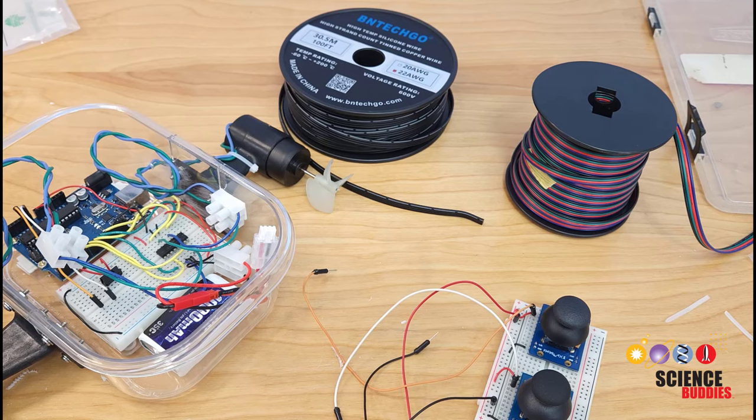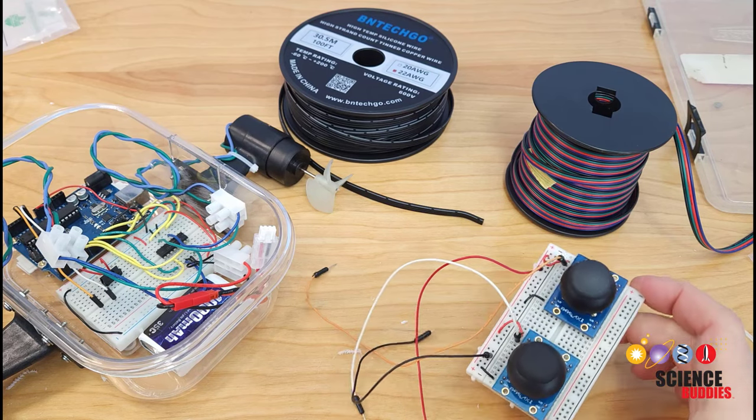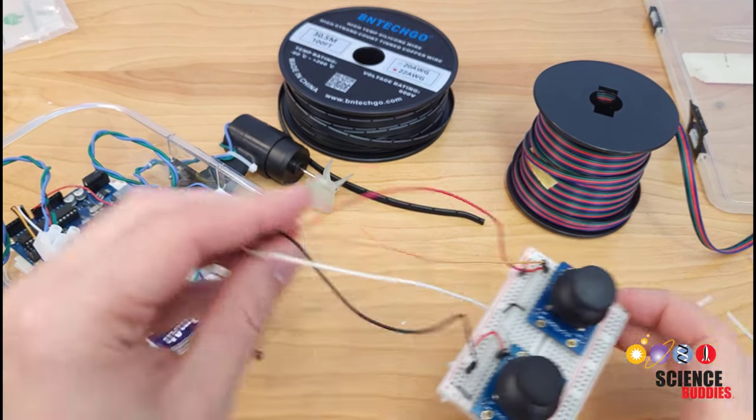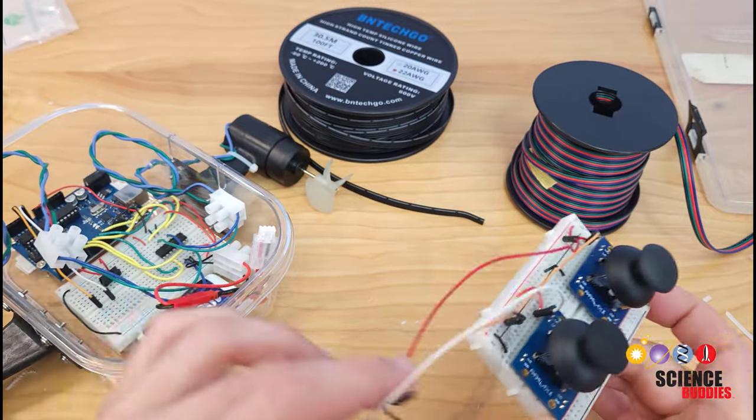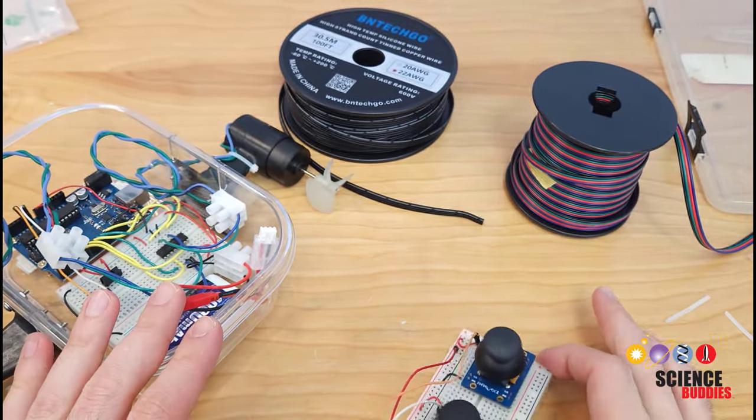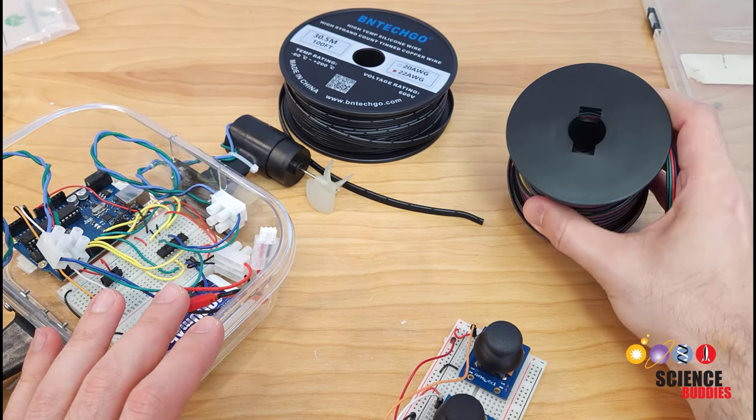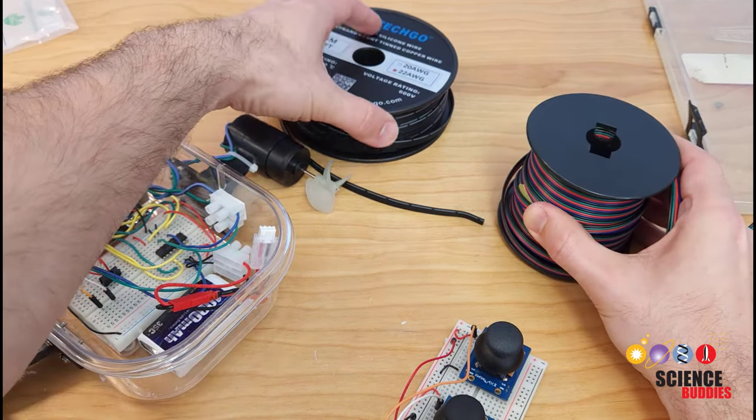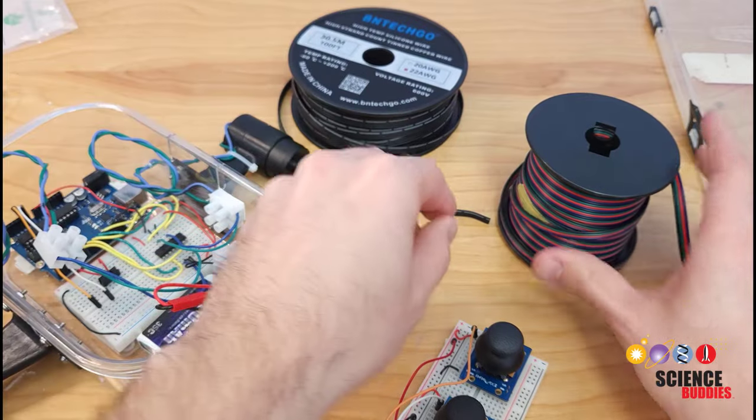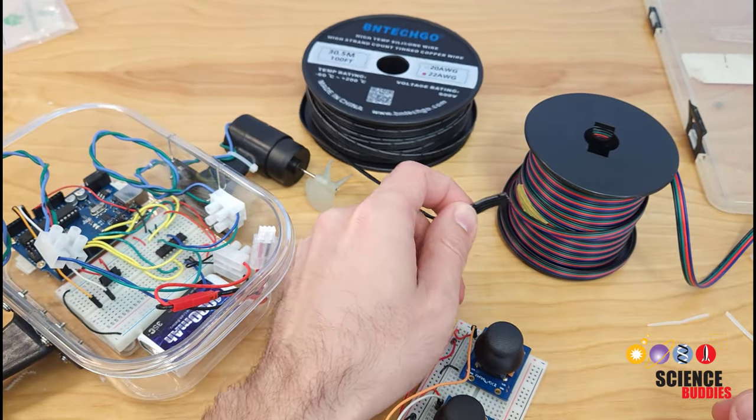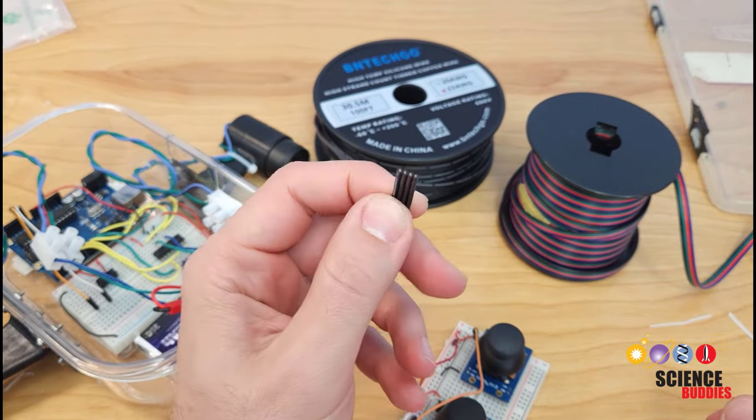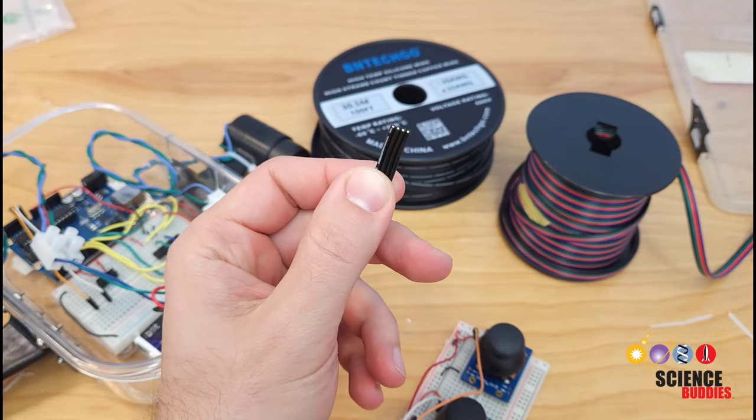For the tether to connect to the remote, you're going to need some very long, flexible wire. Arduino jumper wires aren't going to be anywhere near long enough. You will need four wires, one for the analog signal from each joystick, one for power, and one for ground. If you search online, you can find a variety of ribbon cables that have four wires in them, so this will save you from making your own cable out of four separate wires.